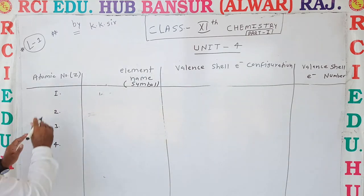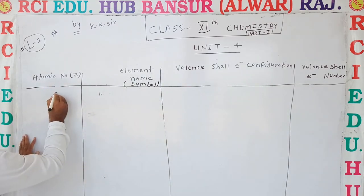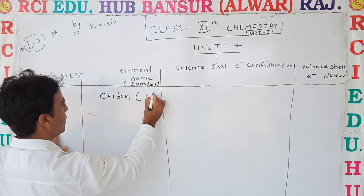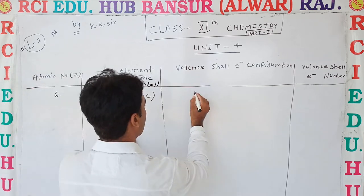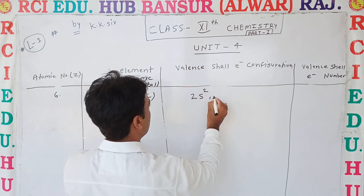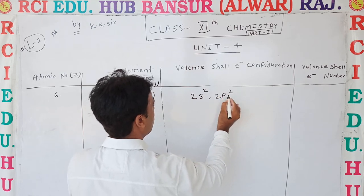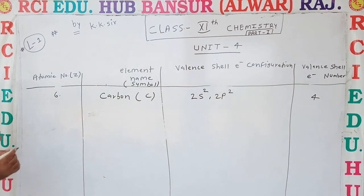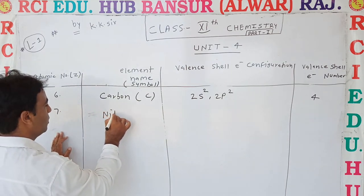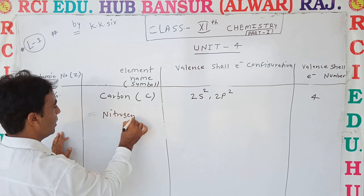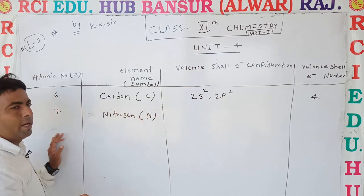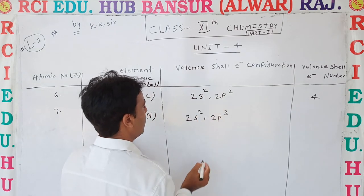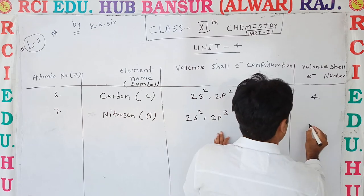Atomic number 6 is Carbon, symbol C. Its valence cell electronic configuration is 2s2 2p2, giving 4 valence cell electrons. Atomic number 7 is Nitrogen, symbol N. Its valence cell electronic configuration is 2s2 2p3, giving 5 valence cell electrons.